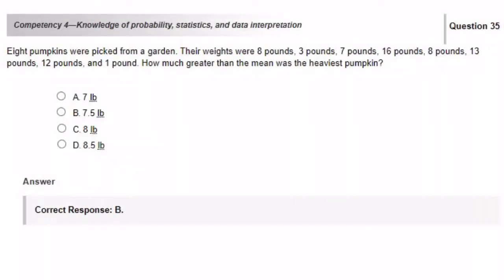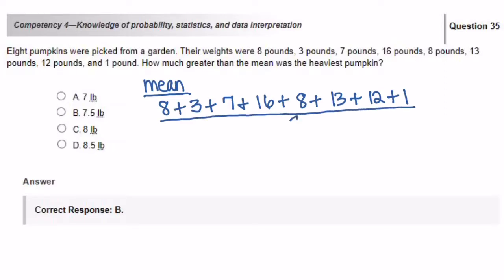Eight pumpkins were picked from a garden. Their weights were eight pounds, three pounds, seven pounds, 16 pounds, eight pounds, 13 pounds, 12 pounds, and one pound. How much greater than the mean was the heaviest pumpkin? To solve this problem, we have to calculate the mean first. So we're going to add up all of the numbers and then divide it by eight.